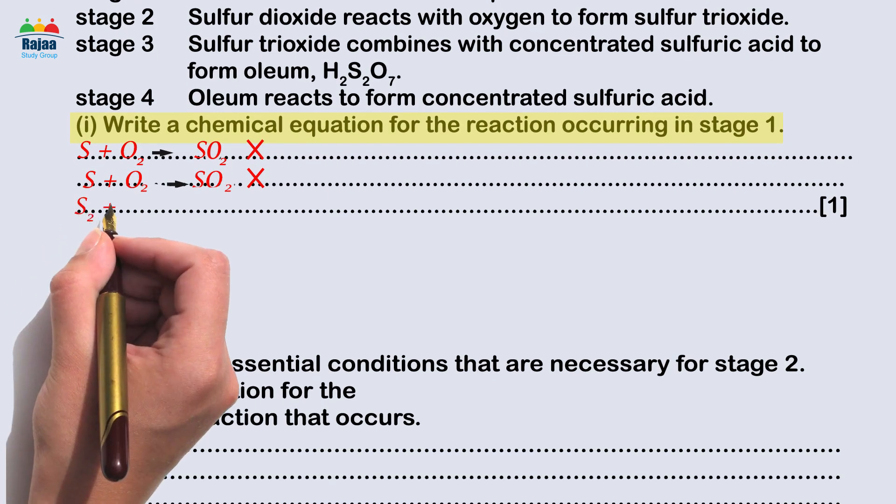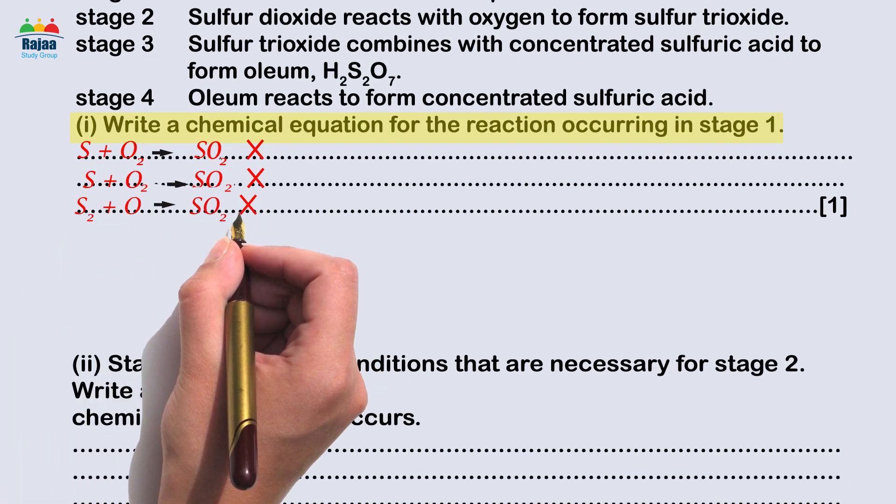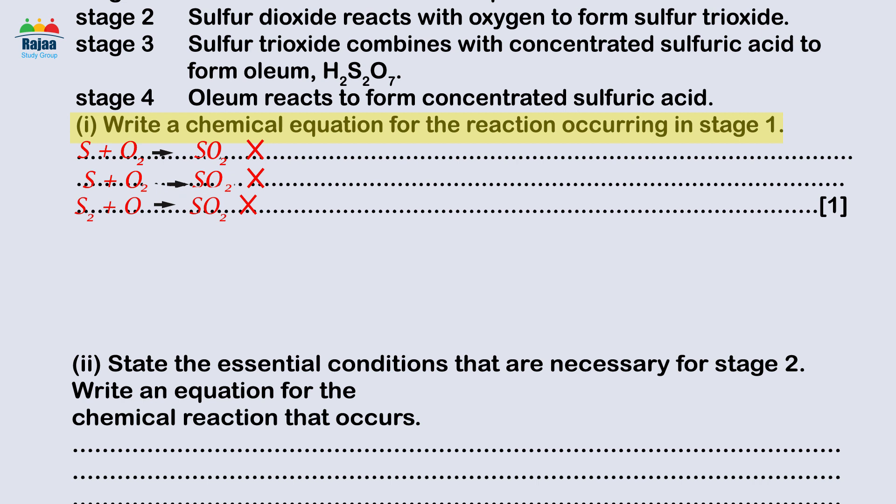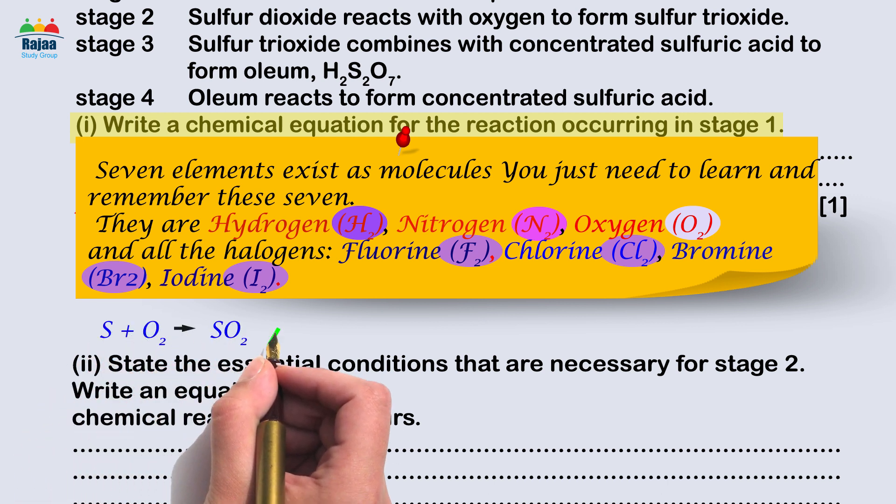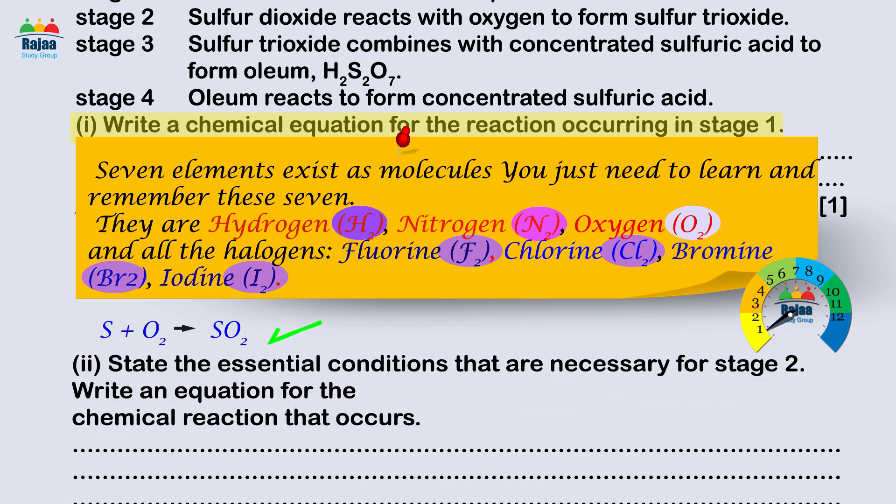Few students wrote the equation's formula in the following format: S2 + O → SO2, assuming that sulfur, one of the elements, exists as molecules. The sticky notes show seven elements exist as molecules. The correct equation was S + O2 → SO2. Score: one mark.